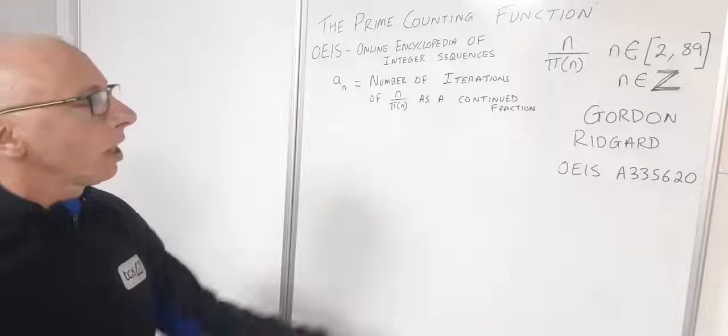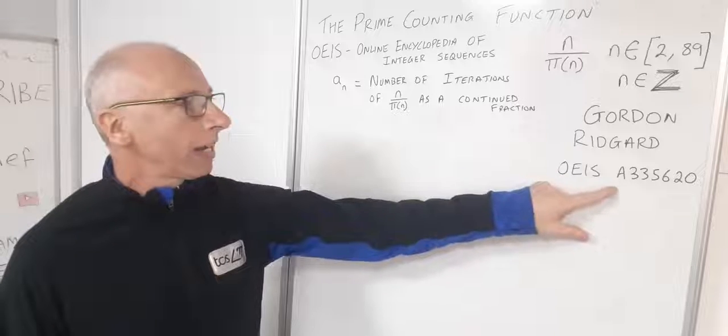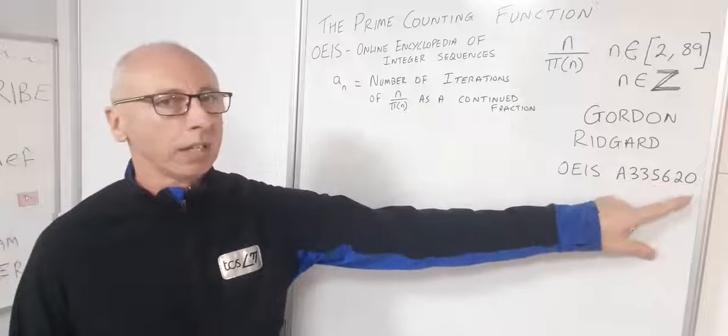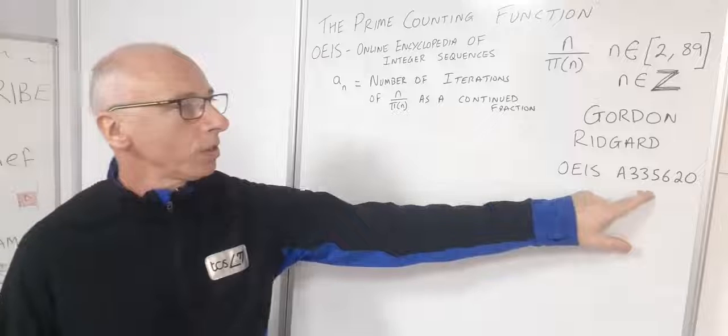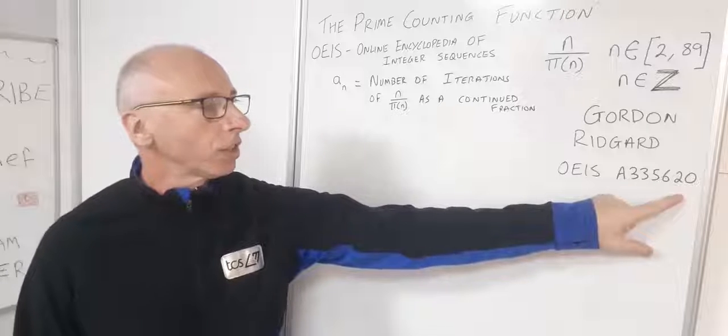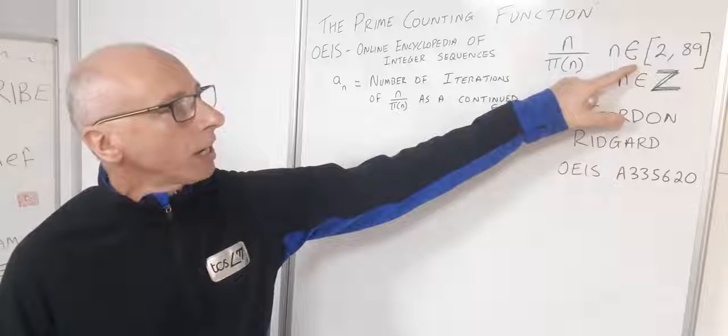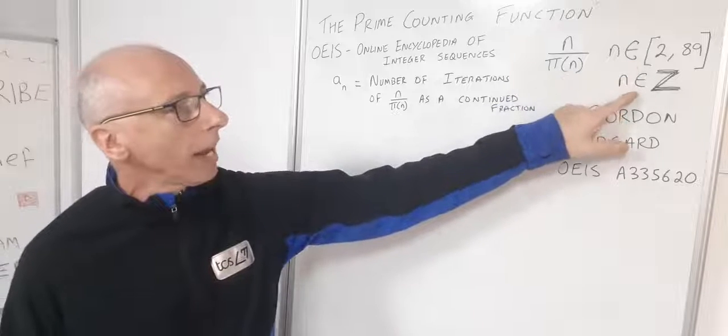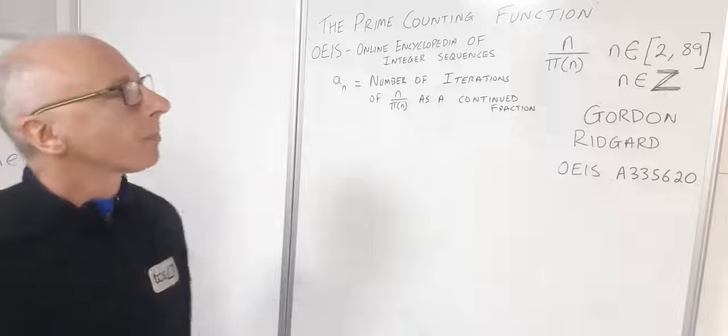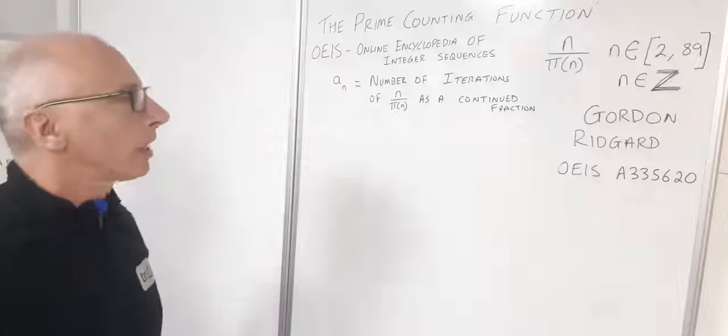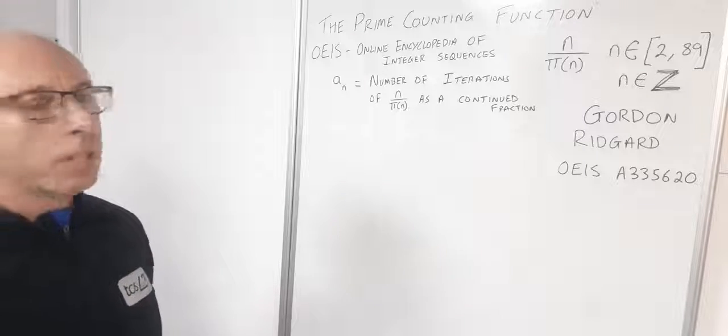If you go to OEIS A335620 you'll see all of those sequences in action in graphs and all kinds of formats. He submitted this for the range from 2 to 89 where n is in the integers. I'm going to look at a couple examples and show you how this is worked out.